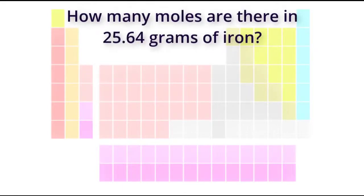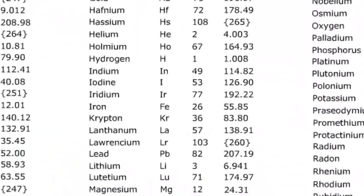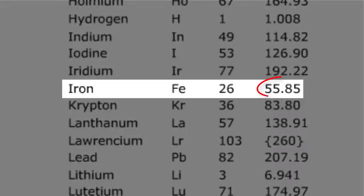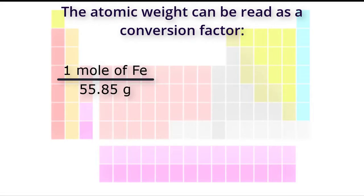How many moles are there in 25.64 grams of iron? In order to solve this, we first need to find the atomic weight of iron. From the table of atomic weights by name, the atomic weight of iron is 55.85 grams per mole.